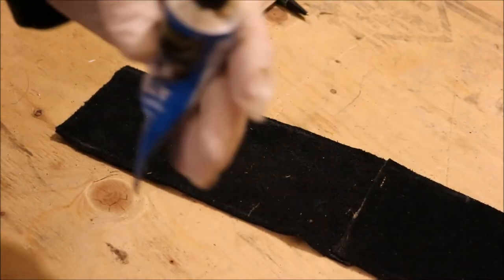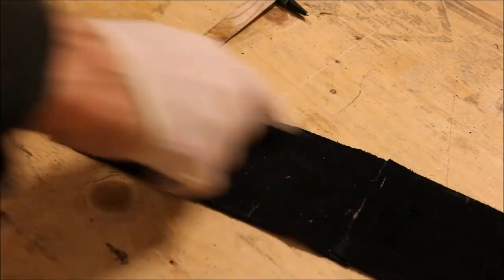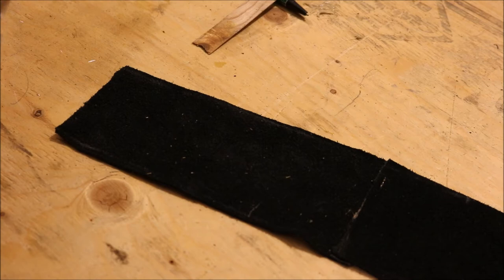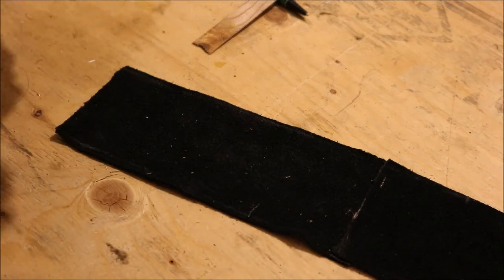Okay, we're going to put some barge cement down this line that we made, both sides. We'll let it dry 15 minutes and put it together. So remember to use a mask when you're using this glue, it smells bad.